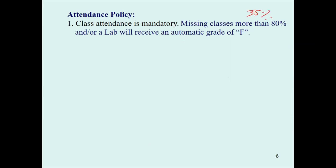Attendance policy: if you arrive within 15 minutes of the start and stay for the whole class, you get 1 point. If you arrive after 15 minutes, you get 0.5 points. If you don't come at all, you get 0. If your missing points total four or more — for example, coming 30 minutes late for eight out of 12 classes — you get an F. If you skip class entirely four times, you automatically get an F.